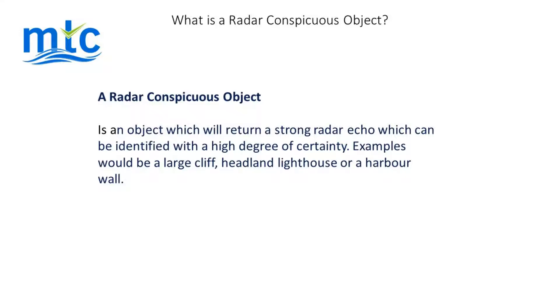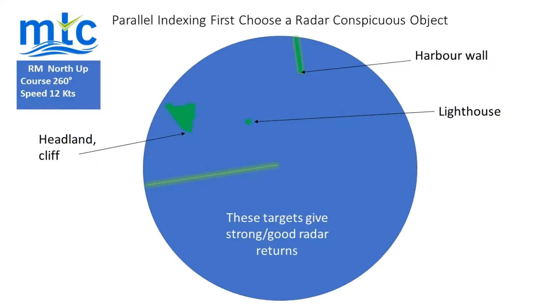Examples of radar conspicuous objects would be a large cliff, headland, lighthouse, or harbour wall. Here we can see targets that give a good strong radar return and are radar conspicuous.